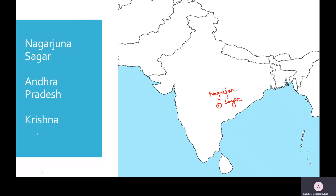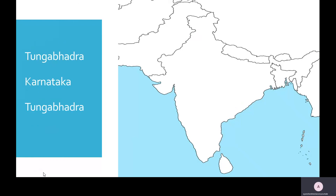The Nagarjuna Sagar Dam is built on the River Krishna. Then the last dam is the Tungabhadra Dam, located in Karnataka on the River Tungabhadra. Karnataka also shares its boundary with Maharashtra. Below the Nagarjuna Sagar Dam, we locate the Tungabhadra Dam.